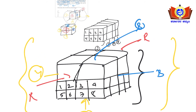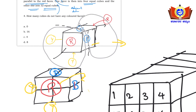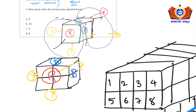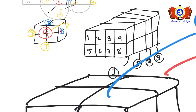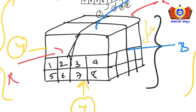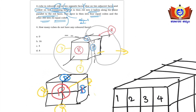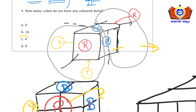The question is: how many cubes do not have any colored faces? From the first (smaller) piece, you won't get any uncolored cubes. But from the second (larger) piece, the inside set will have cubes with no faces colored. Behind cubes 2, 3, 6, 7 there are 4 cubes not painted with any color. The answer is option C.